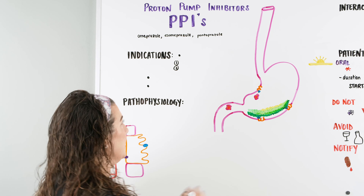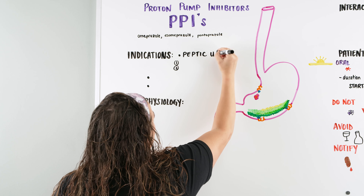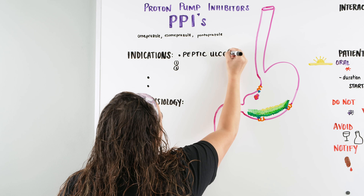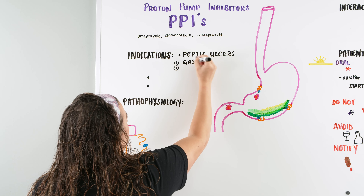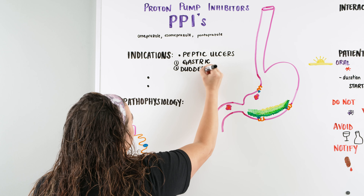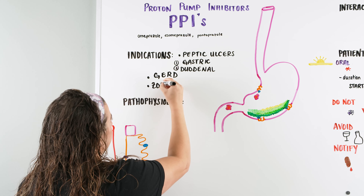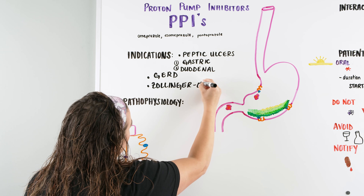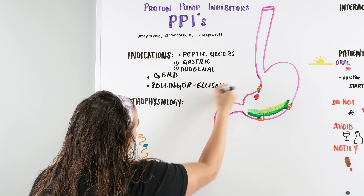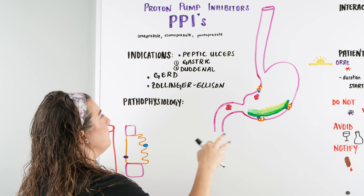The first indication is if we have a patient that comes in having some irritation in the stomach — we find out they have little lesions on the inside of their stomach, and we call those ulcers, particularly peptic ulcers. There are gastric ulcers and also duodenal ulcers. Another indication is if the patient has a lot of acid buildup — they're going to have possibly a lot of GERD, acid reflux. And then there's also Zollinger-Ellison syndrome, which has to do with too much gastric juices as well.